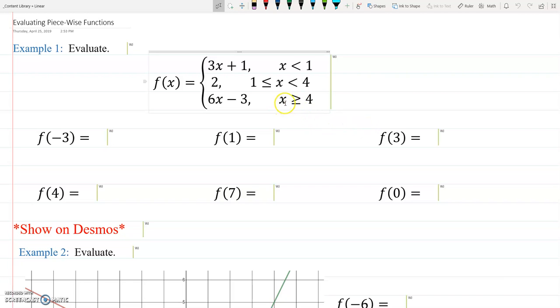Alright, so down here, if x is negative 3, then negative 3 is not greater than or equal to 4, so we're not using the bottom line. Negative 3 is not in between 1 and 4, so we're not using the middle line. Obviously, negative 3 is smaller than 1, so we are using the top line.